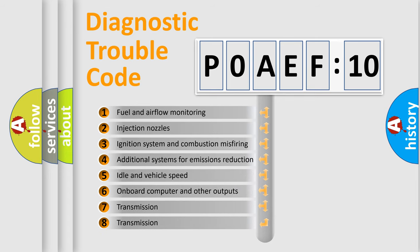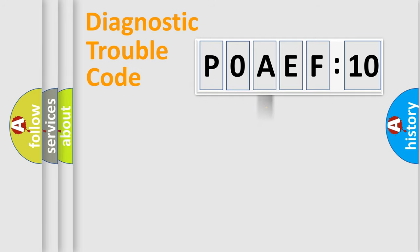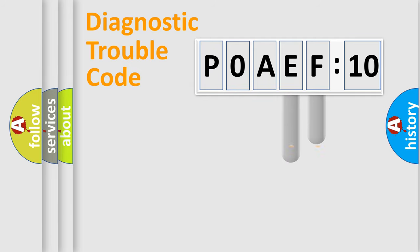The third character specifies a subset of errors. The distribution shown is valid only for the standardized DTC code.